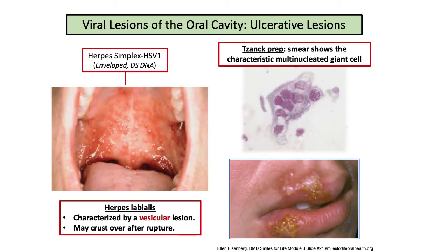For HSV, a key derivative will be the pathology description of the Tzanck prep. You should be familiar with the description of the multinucleate giant cell. This prep is done by swabbing material from the base of the vesicle onto a slide and staining it with Wright stain. A positive smear demonstrates the characteristic multinucleated giant cell. Be aware that these may also be seen in HSV-2 and VZV, varicella zoster virus.